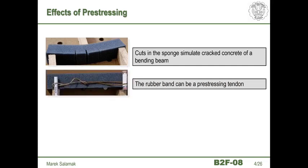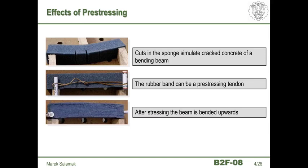Now we will do some modifications to our sponge. Let's imagine that we drill an elongated hole located in the lower part, not in the center of gravity of the cross section. Through the gap we move an elastic rubber, at the ends of which we put two sticks used to tighten the rubber and anchor it. If the rubber were located on the axis of the sponge at the center, it would only shorten the entire beam. But since the rubber runs closer to the lower fibers, after tensioning the beam will bend upwards — the bottom fibers will shorten more than the top ones, forcing an inverse deflection of the beam.